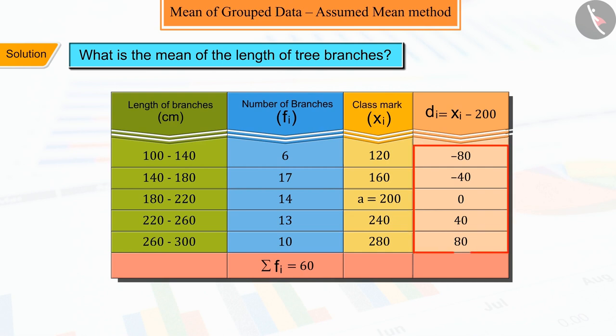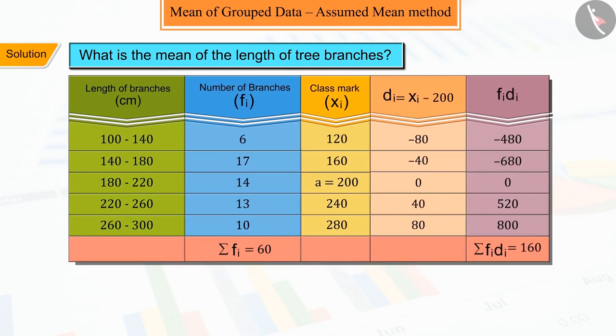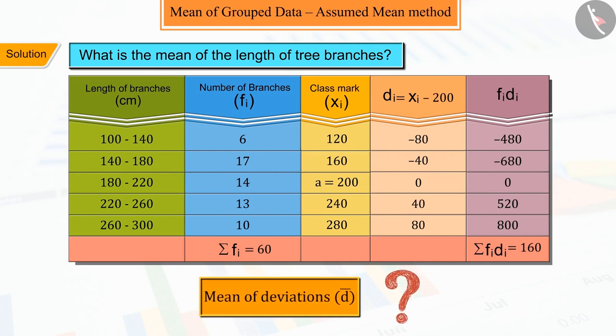Where we multiply each di by its corresponding frequency fi, which gives the product fi di, the sum of whose products are represented in the table below. So can you find the mean of the deviations?